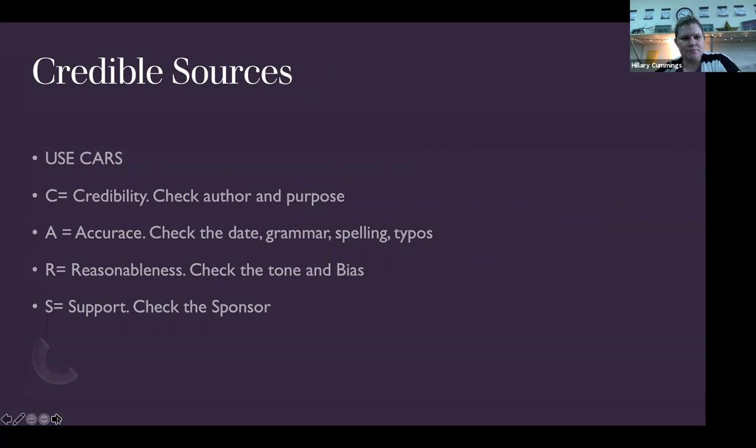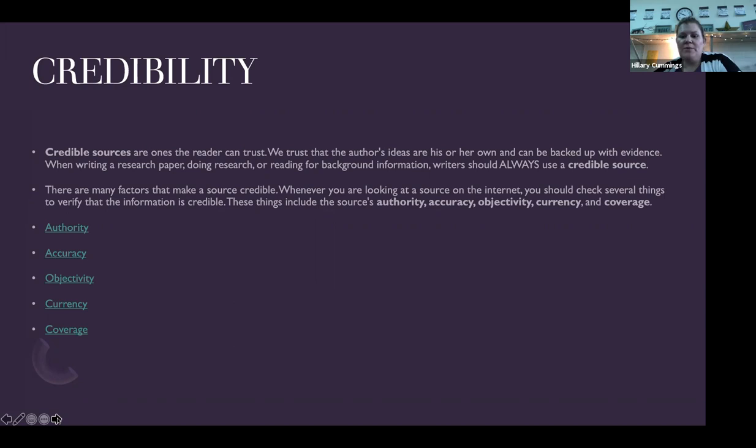When we're evaluating sources, we want to make sure we have credibility, and you can use the acronym CARS. Credibility — check the author and purpose. Accuracy — check the date, grammar, spelling, and typos. Reasonable — check the tone and check the bias. And then Support — check the sponsor. Credible sources are ones you can trust — we can trust that the author's ideas are his or her own and can be backed up with evidence. We always want to use credible sources.